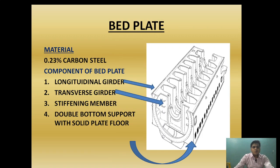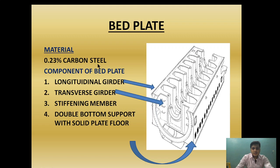Now let's look at the components of the bed plate. First, the material used is 0.23% carbon steel. The carbon percentage is kept low because higher carbon content makes it brittle, but some carbon is needed so that it has inherent vibration absorbance properties. Steel also provides resistance to rust and oxidation, as well as higher strength.